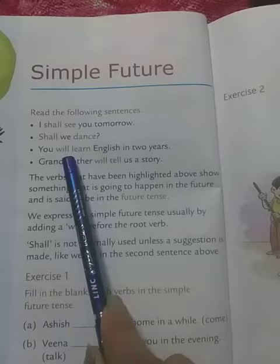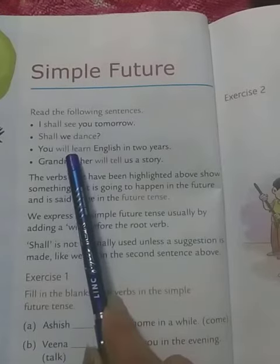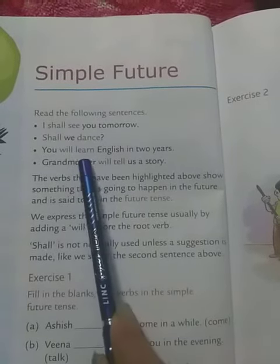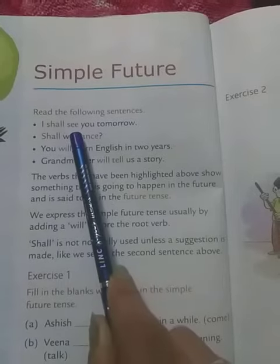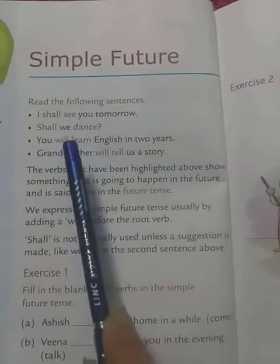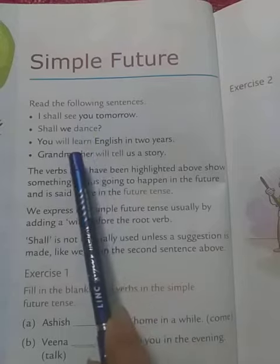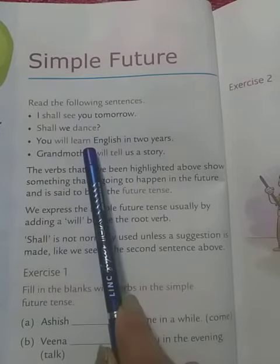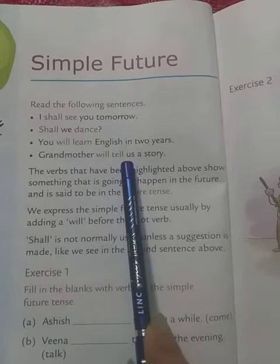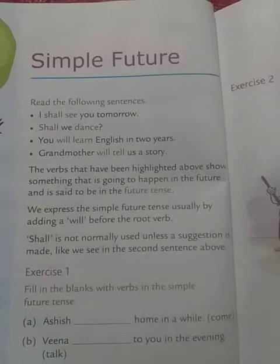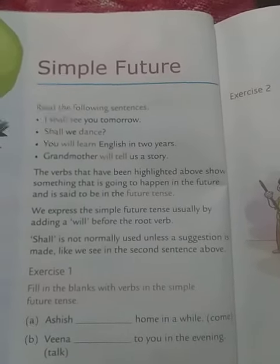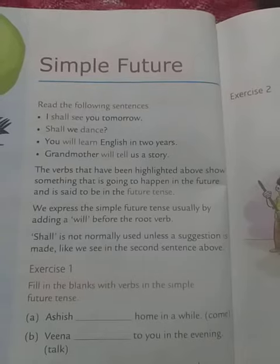Always will and shall come before the main verb. See is the main verb. Dance is the main verb. Learn is the main verb. Tell is the main verb. The exercises we will do next day.